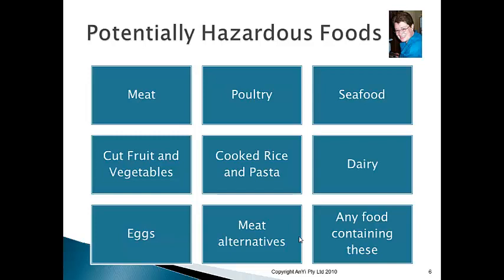Potentially hazardous means the food contains pathogens — bacteria, viruses — and if not handled properly, those pathogens will grow rapidly. So cut fruit and vegetables are just as dangerous as meat, poultry, and seafood.